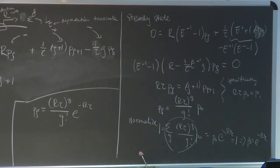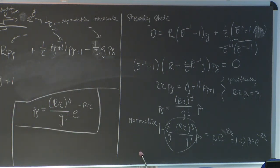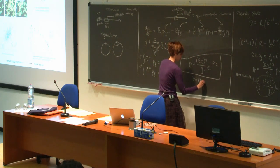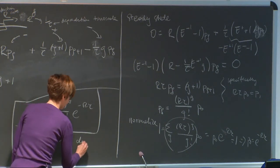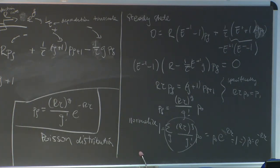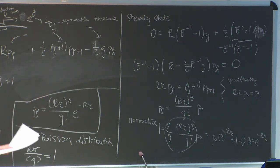Solving this recursion relation and normalizing as a probability distribution, I get that P(G) = (Rτ)^G / G! · e^{−Rτ}. You should be getting a warm and fuzzy feeling now. What is this distribution called? Poisson. It's a Poisson distribution. And why do we love the Poisson distribution? The mean is equal to the variance.